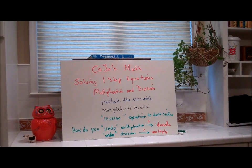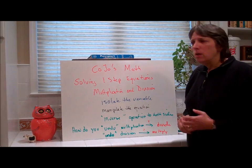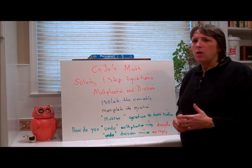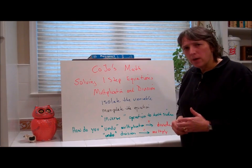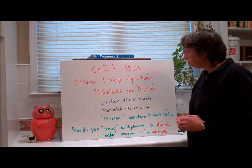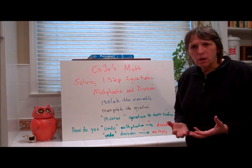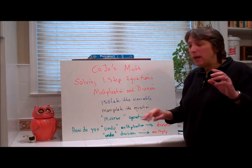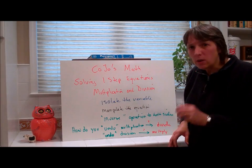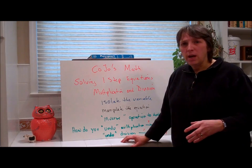Welcome to Kojo's Math, solving one-step equations that are multiplication and division. You should be feeling pretty good now about solving addition and subtraction one-step equations. Let's do a quick review. When you are solving any equation, you want to isolate the variable, and you do this by manipulating the equation and doing the inverse operation to both sides.